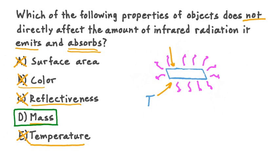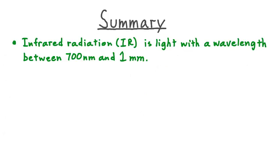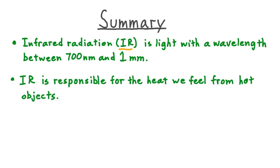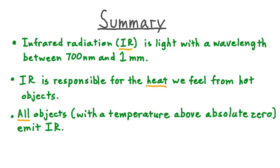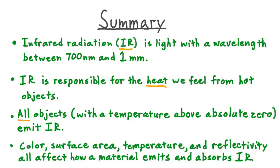Let's summarize what we've learned about infrared radiation. First, infrared radiation, often referred to as IR, is light that has a wavelength between 700 nanometers and one millimeter — that's the place infrared radiation occupies on the electromagnetic spectrum. We learned further that infrared radiation is the kind of radiation responsible for the heat that we feel coming from hot objects. Furthermore, all objects, as long as their temperature is above absolute zero, emit infrared radiation. Finally, a material's color, its surface area, its temperature, as well as its reflectivity, are all properties that affect how it emits and absorbs infrared radiation.